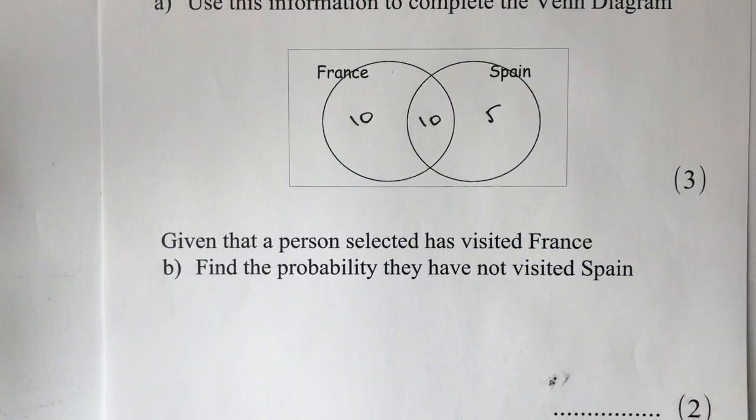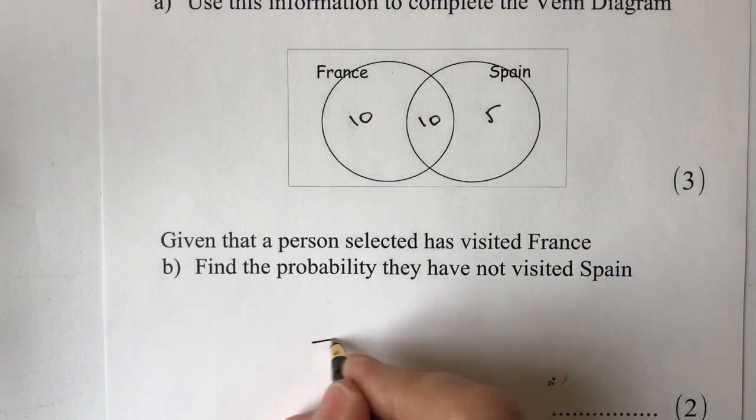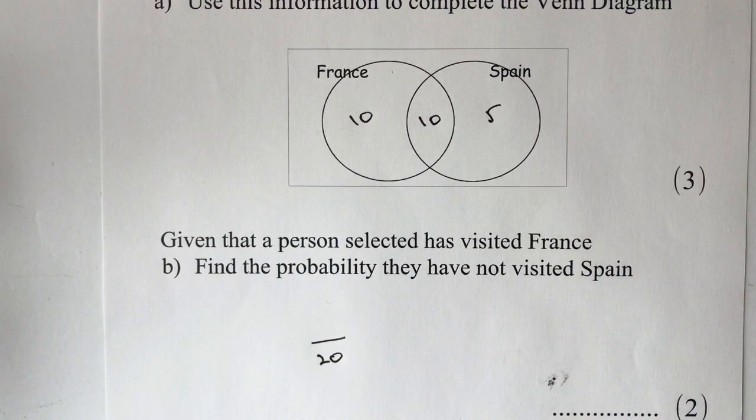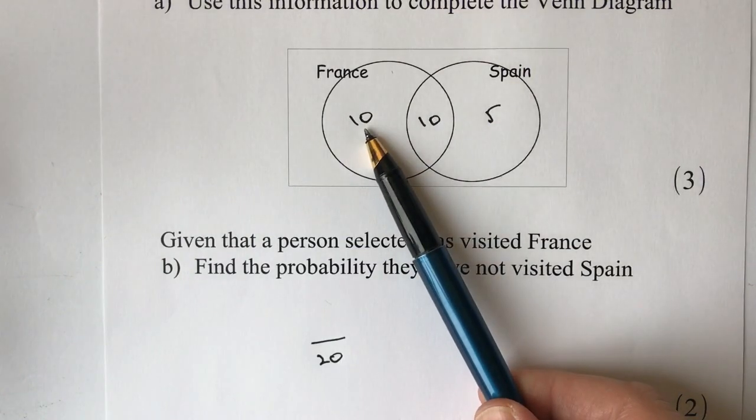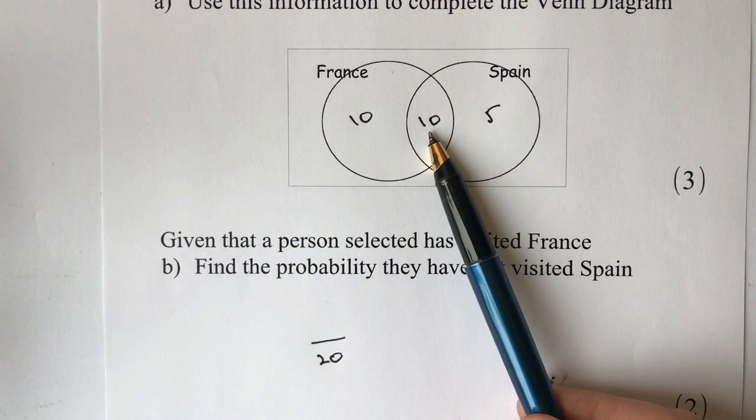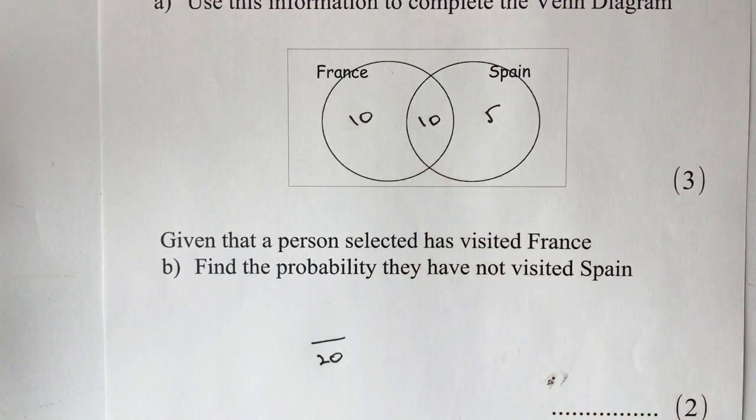So given that a person selected has visited France, well if they visited France it must be out of 20, because if we go back to the original diagram there are 10 people who have only been to France and 10 people who have been to France but also been to Spain, so there's 20 in total altogether.